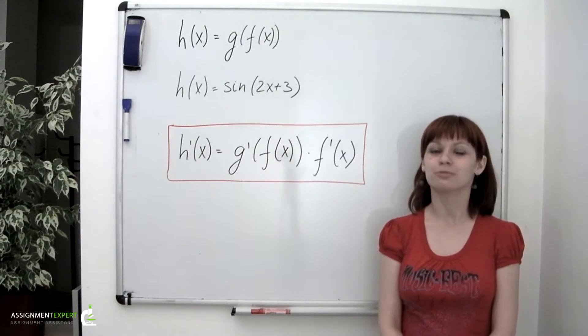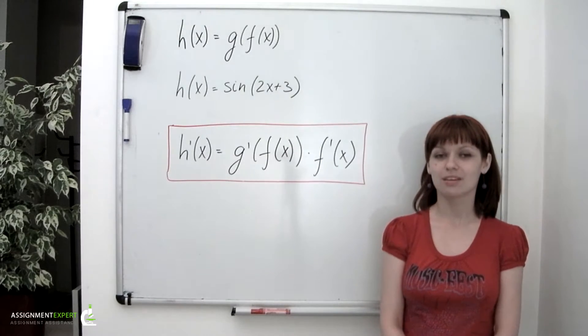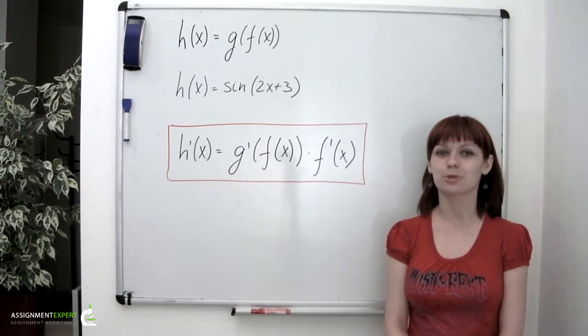In this video we're going to talk about chain rule, which is used for finding derivatives of composite functions. First of all, what's a composite function? Well, basically it is a function of another function. Let's take a look at the board.